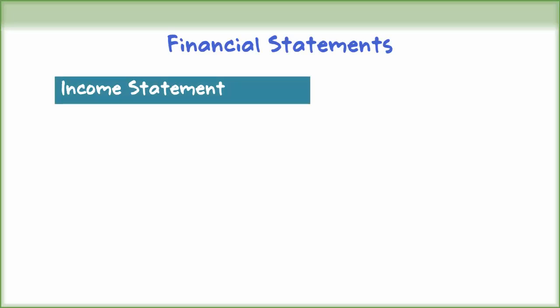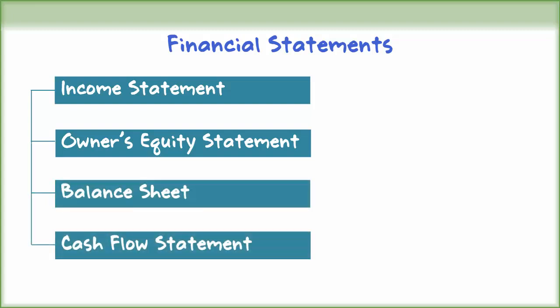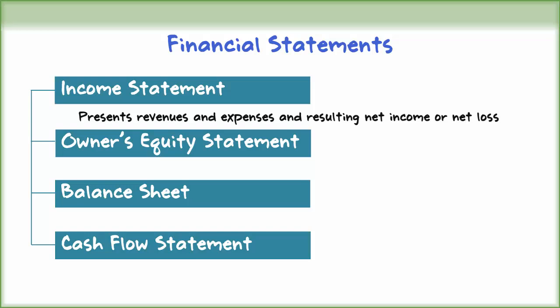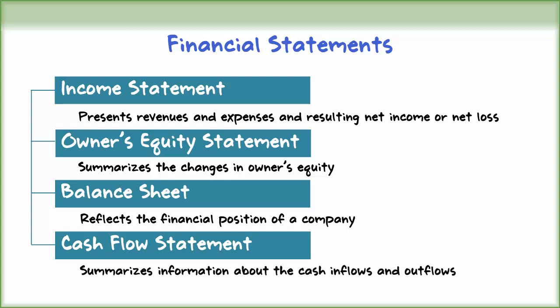Financial statements are comprised of an income statement, an owner's equity statement, a balance sheet, and a statement of cash flows. An income statement presents the revenues and expenses and resulting net income or net loss for a specific period of time. An owner's equity statement summarizes the changes in owner's equity for a specific period of time. A balance sheet reports the assets, liabilities, and owner's equity of a company at a particular date. A statement of cash flows summarizes information about the cash inflows and outflows for a specific period of time.